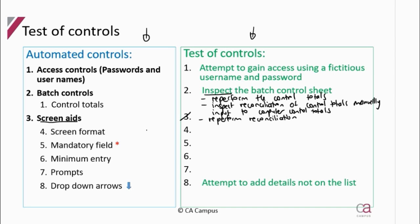For screen aids, when a user goes into a specific area of the system — for example to create a purchase order — the screen must look like a purchase order, matching the hard copy document format. You can inspect that the screen format matches the hard copy documents.